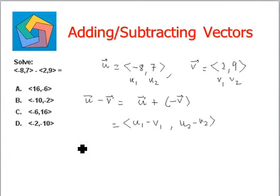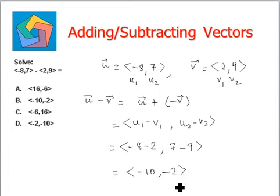So v1 can be negated and v1 will then become like this, negative 8 minus 2 comma 7 minus 9. So this is negative 10 comma negative 2. This is the final answer. Can be seen in option B.